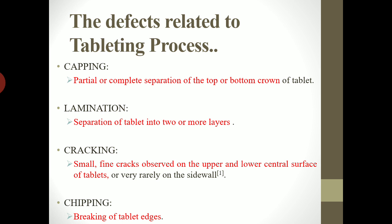Next is cracking. As the name suggests, there will be cracks on the upper or lower central surface of the tablet, or rarely on the side walls — it may occur on the central portion or on the side wall. Next is chipping, which is the breaking of the tablet edges.